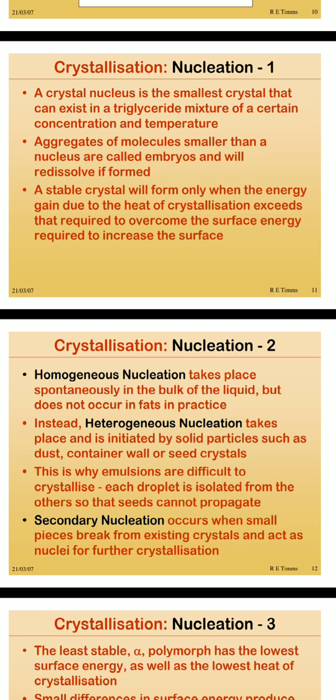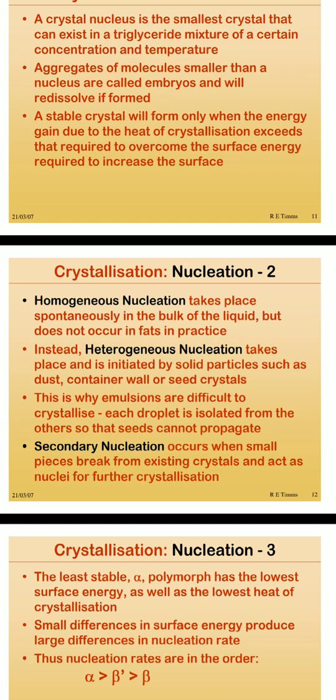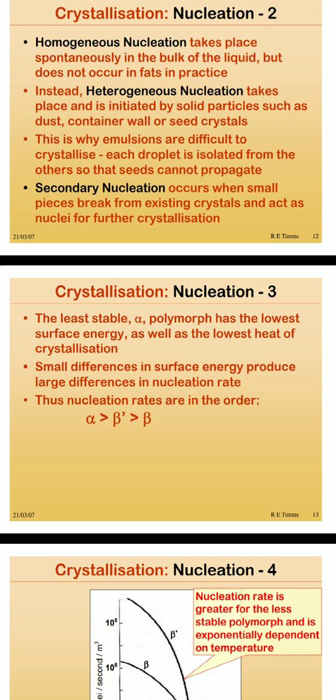In emulsions, two different things are mixed, which is why in a heterogeneous mixture you can easily differentiate any other particle added to it. Secondary nucleation occurs when small pieces break from existing crystals and act as nuclei for further crystallization. The least stable alpha form has the lowest surface energy as well as the lowest heat of crystallization, so it can be easily crystallized. Small differences in surface energy produce large differences in nucleation rate; the order is alpha having the greatest nucleation rate, followed by beta-prime and then beta.